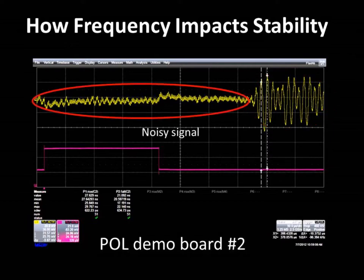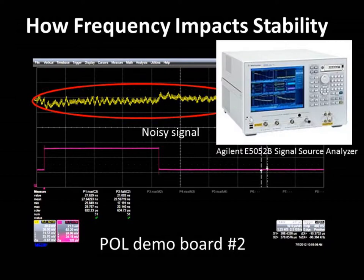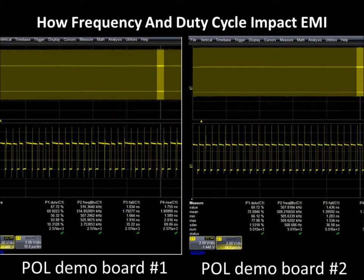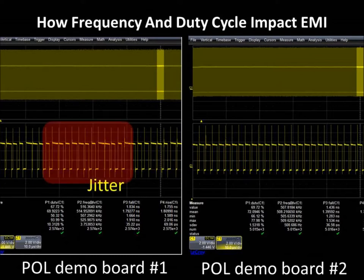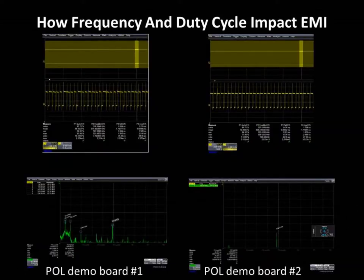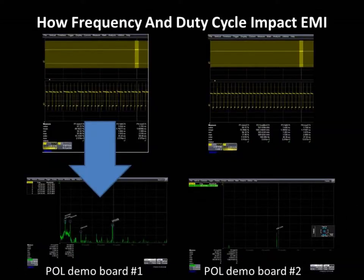We can generally measure this jitter using an oscilloscope, but for the higher fidelity measurement, we can use a signal source analyzer or phase noise analyzer to measure the jitter. This set of images shows both time domain and spectrum measurements of the switch node of the same two point-of-load demo boards measured in the previous slide. In the time domain measurements on top, the frequency jitter is easily seen in the board on the left, but not on the right. Then in the spectrum analysis measurements, we see the impact that the frequency jitter has on the EMI performance and also on the output ripple and noise from the point of load.